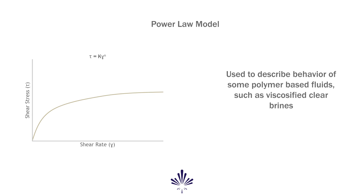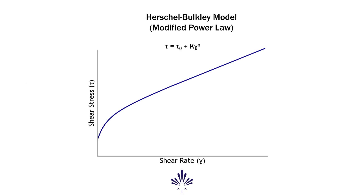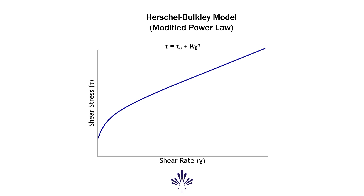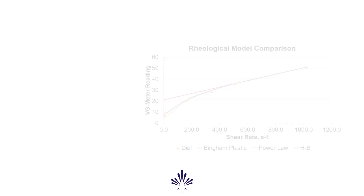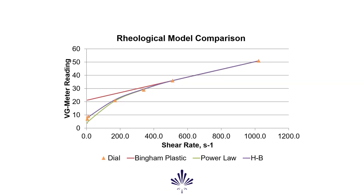The Herschel-Bulkley model, also termed modified power law, builds upon the conventional power law model by accounting for the stress required to initiate fluid movement — i.e., the yield stress. As seen in this graph, the Herschel-Bulkley model incorporates the characteristics of both the Bingham plastic model and the power law model. It is slightly more complicated in its calculation, but it can arrive at a more accurate and true rheological prediction of most drilling fluids. It is the model officially used in API hydraulic calculations. The data provided by equipment such as the 6-speed viscometer and HPHT viscometer is integral to building and running rheological models.